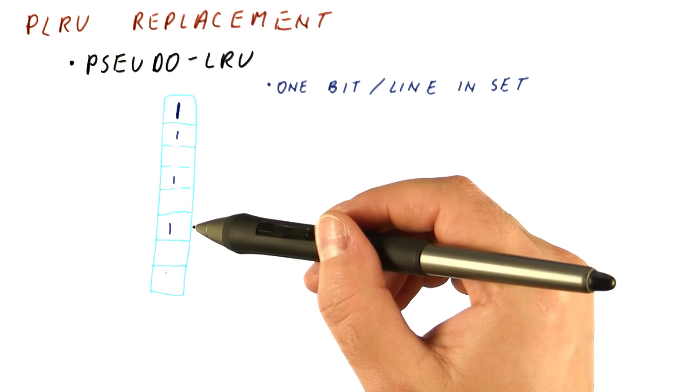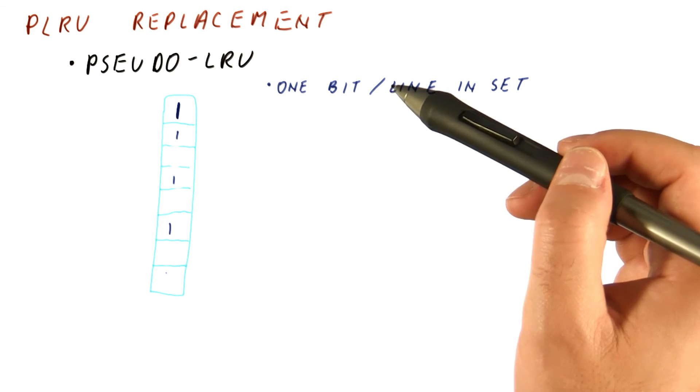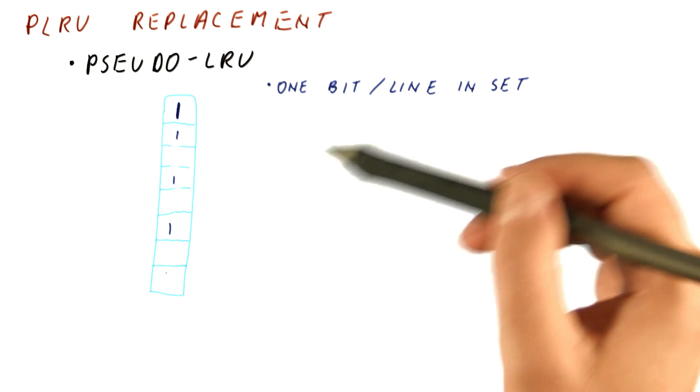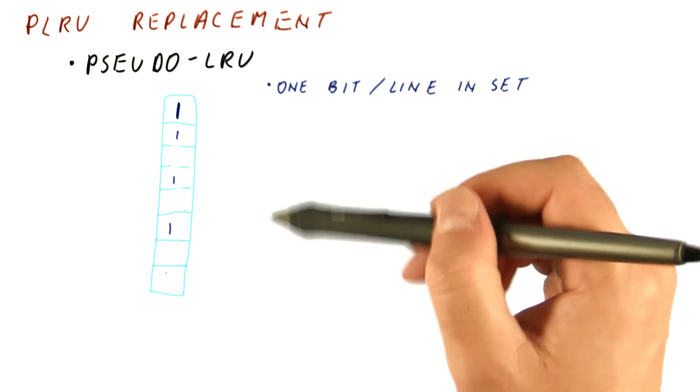As far as activity on a cache hit is concerned, both pseudo-LRU and NMRU have much less activity than LRU, which helps us with both power and also hit time of the cache.